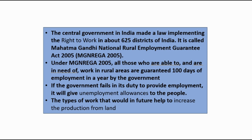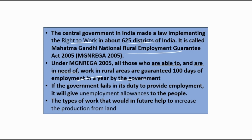With proper planning and government support, improving the tourism sector could provide additional employment for 35 lakh people every year — through tourist guides, transporters, drivers, and food services. The government should take such measures to increase production and income. The central government implemented the Mahatma Gandhi National Employment Guarantee Act (MGNREGA) 2005 in about 250–260 districts of India, guaranteeing 100 days of work to anyone unemployed. If the government cannot provide work, they must compensate financially. The work mainly involves land-related tasks like clearing and gardening.